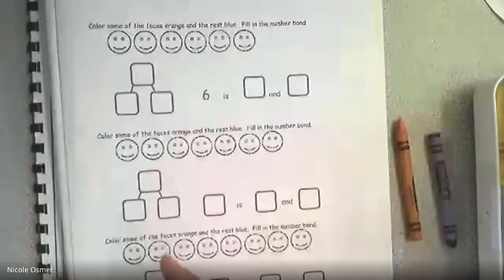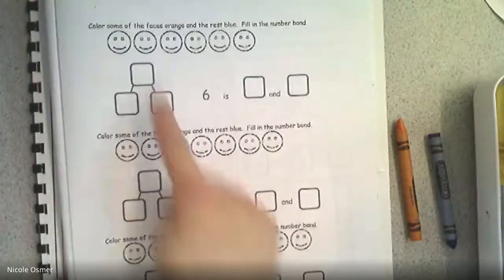After you're done your paper, we are going to do, you can watch the Eureka lesson and then do the follow-up lesson 10 problem set. If you have any questions, I'm going to go over here. You're going to color some of the faces orange, so you need your orange crayon and some blue. We're going to make the total, how many all together? Six.